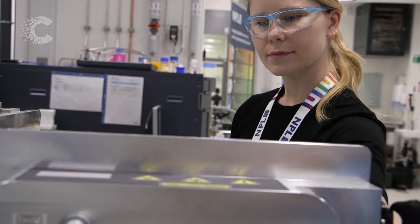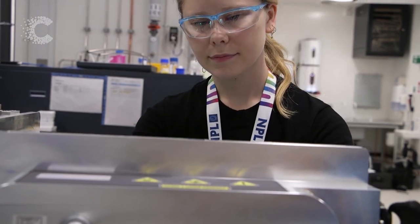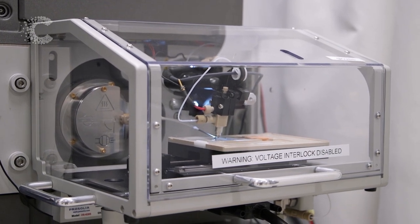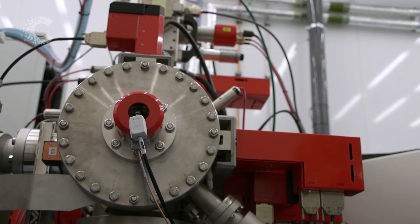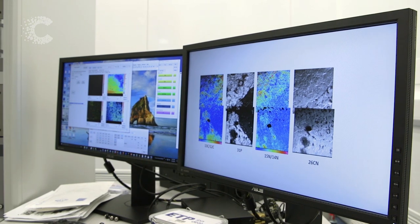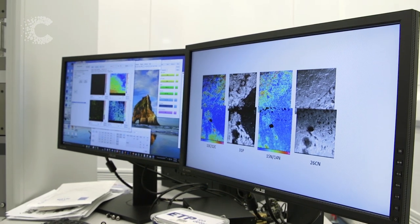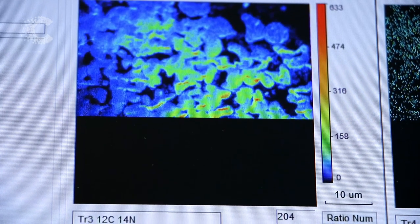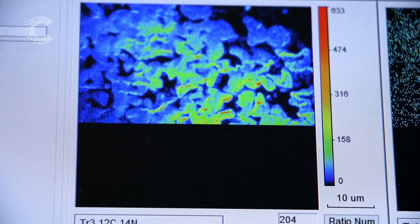There's no technique that measures all the things we want across all the scales, so we have to achieve this by producing images using a whole range of techniques and cleverly stitching together the information. We then use the colours of the rainbow to represent all the different types of chemical we're interested in.